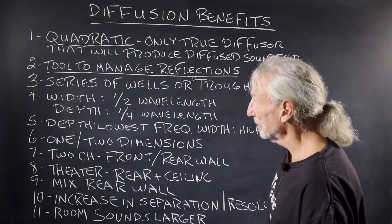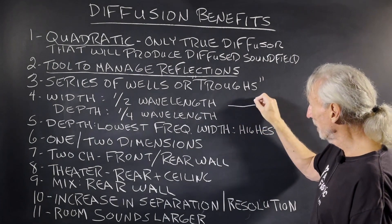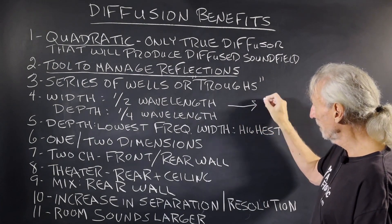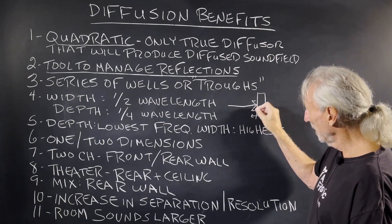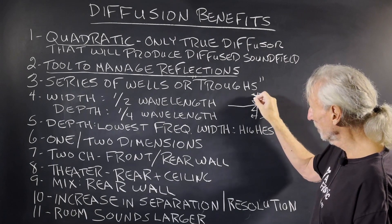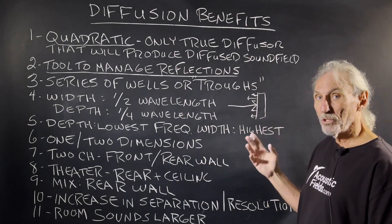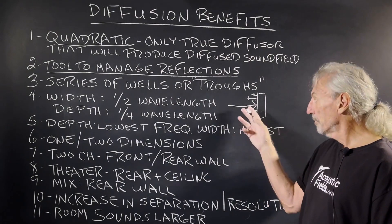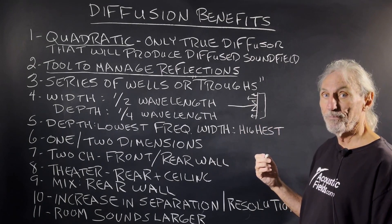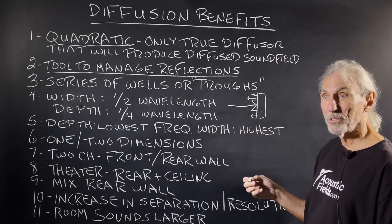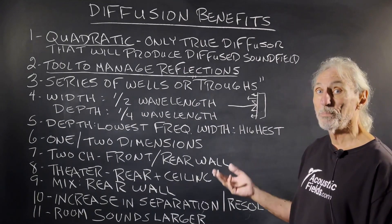It's a tool to manage reflections — that's basically what it does. In a simplified way, you can take a big reflection, put it in a diffuser, and it's going to come back as a series of smaller reflections with no change in amplitude or time. It's just going to take a big reflection and make it smaller, so it's more difficult for us to localize. A series of smaller reflections is difficult for our brain and hearing mechanism to localize, so the room sounds bigger.